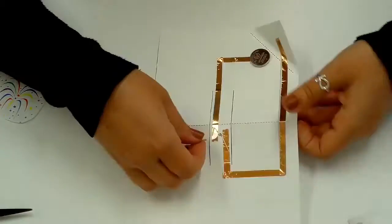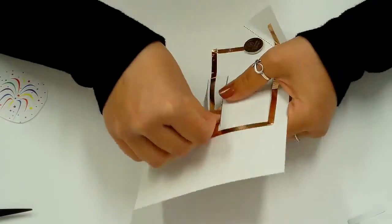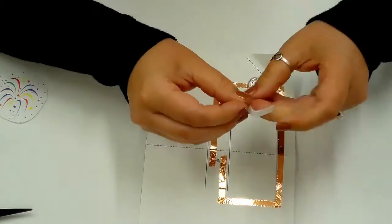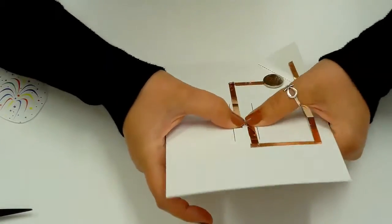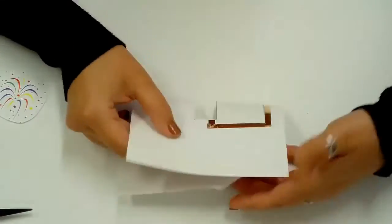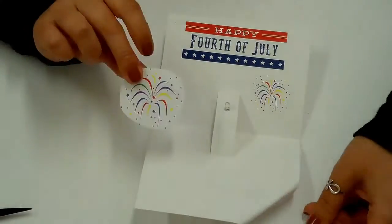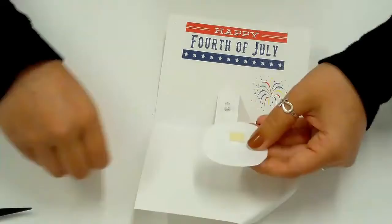Once the negatives and positives are correct, it's time to tape down the arms of the LED with the leftover copper tape. Add the firework image using the double stick tape.